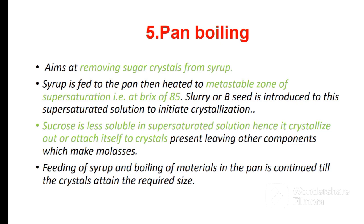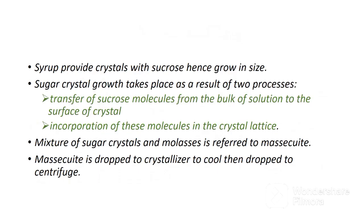Feeding of syrup and boiling of materials in the pan is continued until the crystals attain the required size. Syrup provides crystals with sucrose, hence they grow in size. Sugar crystal growth takes place as a result of two processes: transfer of sucrose molecules from the bulk of solution to the surface of crystals, and the incorporation of these molecules into the crystal lattice. The mixture of sugar crystals and molasses is referred to as massecuite.